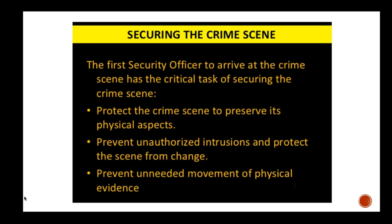The second step is to prevent entry of all unauthorized people into the crime scene — media, onlookers, viewers, and nearby people. The crime scene must be secured with barrier tape, and nobody should be allowed inside. As mentioned, through the yellow tape certain people may be allowed, but through the red tape only forensic experts and those dealing with major evidence should enter. Unnecessary movement of any physical evidence must also be prevented.